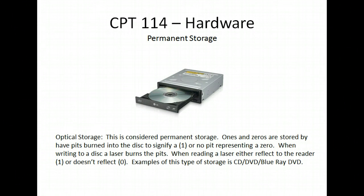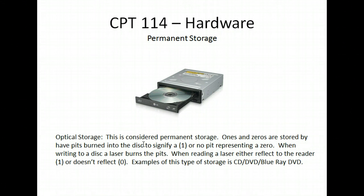The other kind of permanent storage is optical storage — CDs, DVDs, and now Blu-ray DVDs. The only difference between each of them is how close together the pits are on it. It works by shooting a laser at the surface. If it hits a pit and reflects back into a reader, then electricity goes down a wire and that's a 1. If there is no pit, the laser does not reflect back into the reader and that's a 0. This is called optical storage because we're using lasers to store the 1s and 0s.